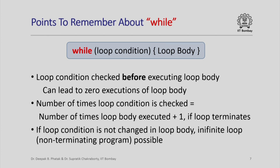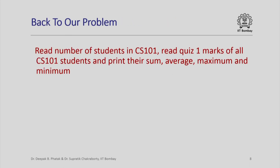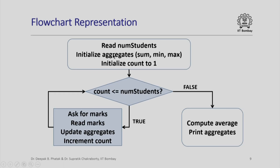There are situations where we might want a program to loop a very large or even infinitely many times, but these are special cases we will see later. Now, looking back at the problem that introduced iteration idioms — reading the number of students in CS101, reading quiz 1 marks of all students, and printing their sum, average, maximum, and minimum — using a while loop we can solve this, and the control flow matches exactly the flowchart pattern for a while loop.